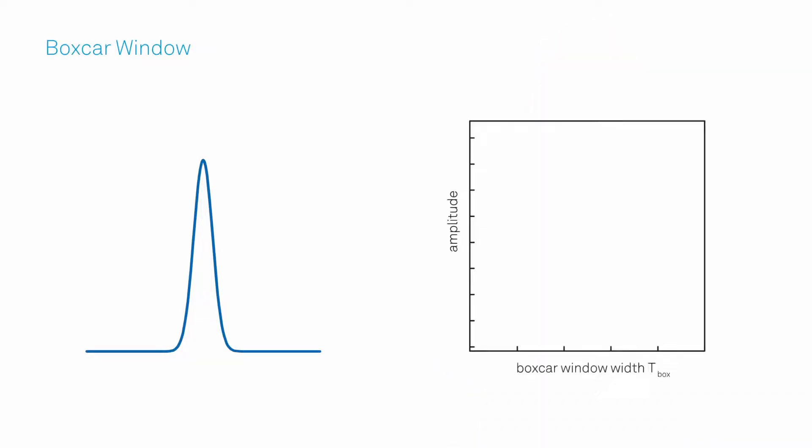Let's take a Gaussian pulse as an example and look at how these parameters affect the measurement performance. The captured signal increases with the window width until the full pulse is covered. But a larger boxcar window also measures more noise.